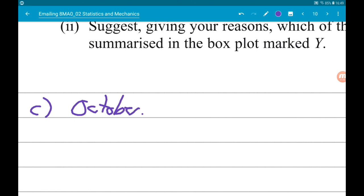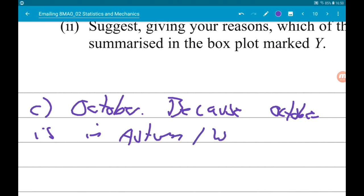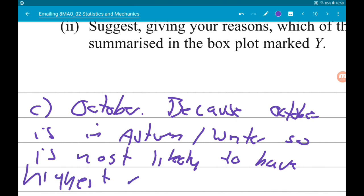So for part C, we're saying October as October is certainly in the autumn/winter, so is most likely to have the highest mean wind speed. Cool.